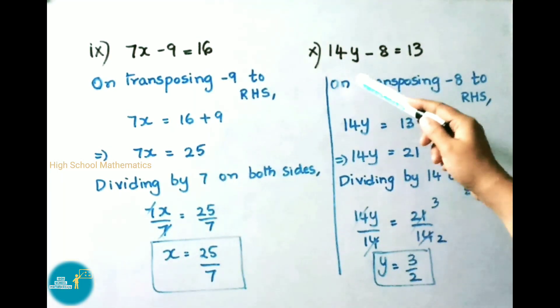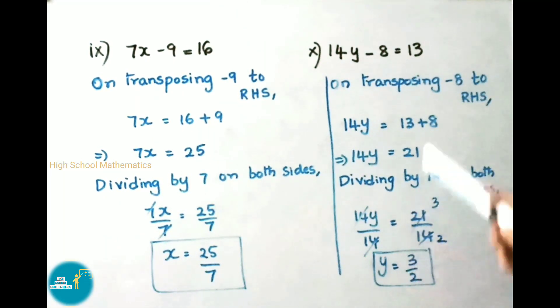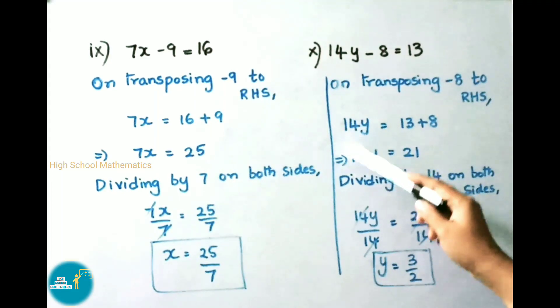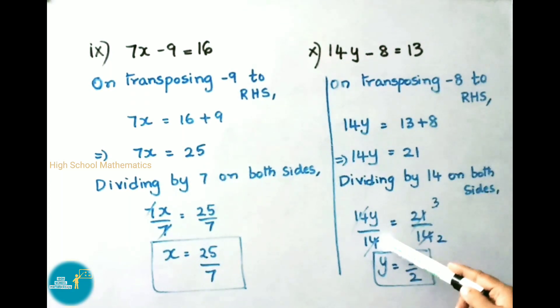Now 10th sum: 14y - 8 = 13. On transposing -8 to RHS, that is right hand side, 14y = 13. Minus 8 becomes plus 8. So 13 + 8. That implies 14y = 13 + 8 = 21. Now we remove this 14 by dividing 14 on both sides. 14y/14 = 21/14. 14 and 14 cancel. 7 × 3 = 21, 7 × 2 = 14. Therefore y = 3/2.